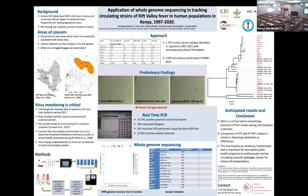Worldwide, there is little data on RVF genetic diversity due to the limited number of RVF disease events, which mostly occur as outbreaks in 5 to 15-year cycles associated with periods of heavy rainfall. RVF activity has been shown to occur during inter-epidemic periods in endemic countries including Kenya. There is a general concern that viral evolution, which can impact virulence and spread, can occur during this period but may go undetected due to limited surveillance in host and vector species.